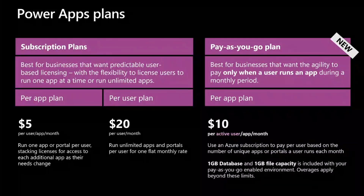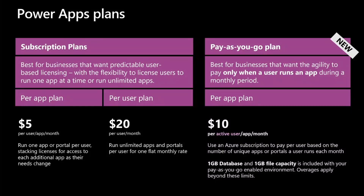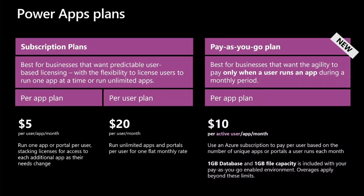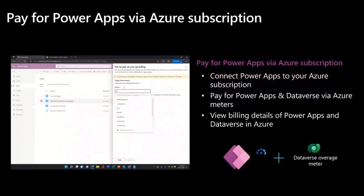One key difference between the existing subscription plans and the pay-as-you-go plan is that you only pay for active users. Active users means your app could be shared with thousands of users, but if only a subset of users end up using that app in a month, you only pay for that subset. Moreover, with pay-as-you-go you get some Dataverse capacity so you can use the Dataverse connector with ease without worrying about storage, and you can easily scale as your needs grow, paying only for overages via Azure subscription.